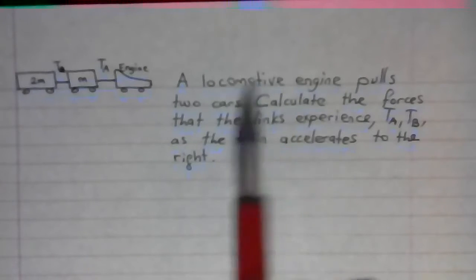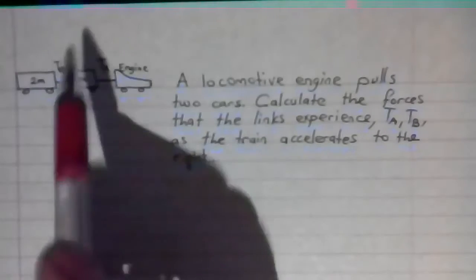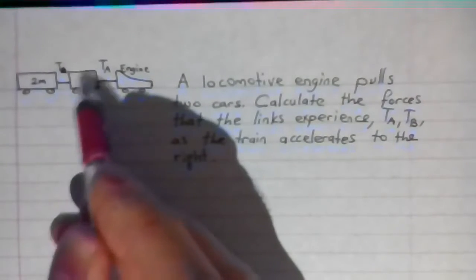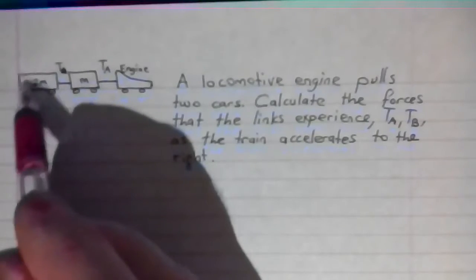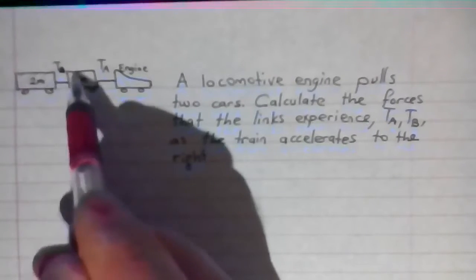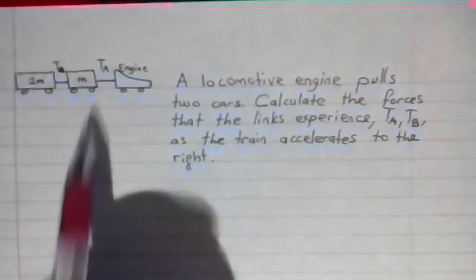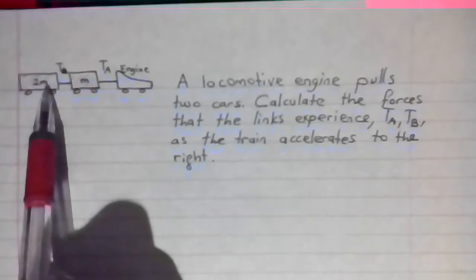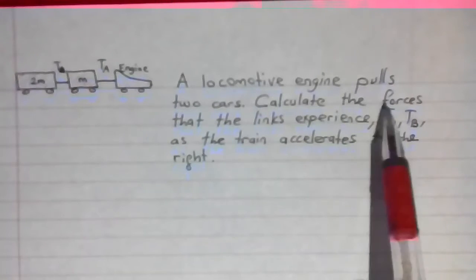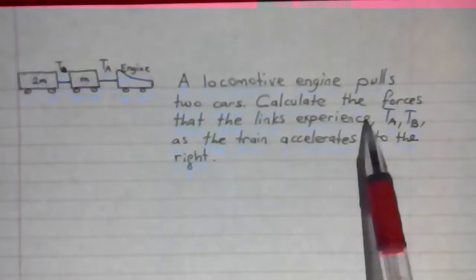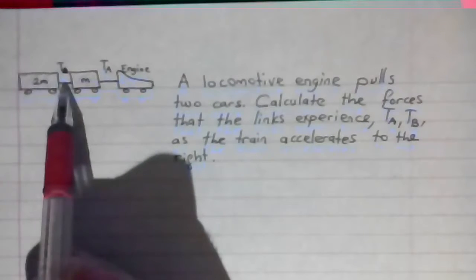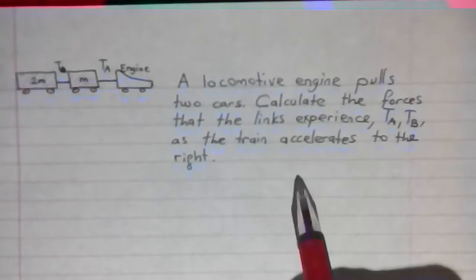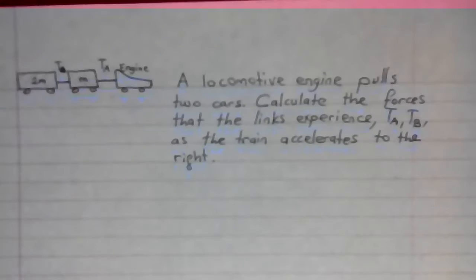A locomotive engine pulls two cars. This is car one and this is car two. Car one is M, car two is 2M. Calculate the forces that the links experience, TA and TB, as the train accelerates to the right. Let's do free body analysis of all the cars.